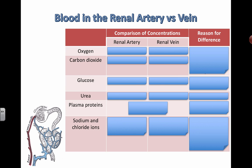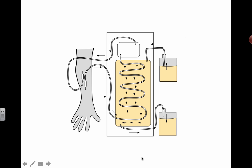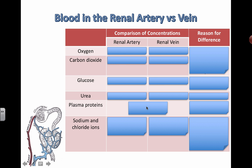So you hook yourself up to a giant machine that looks like this, and your blood basically runs through the entire thing. Using different concentrations of things, your different types of chemicals that you need or don't need will diffuse across a membrane to basically get rid of them. That's what the kidneys kind of do.